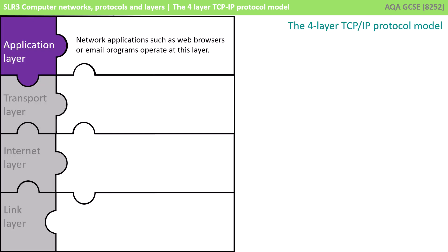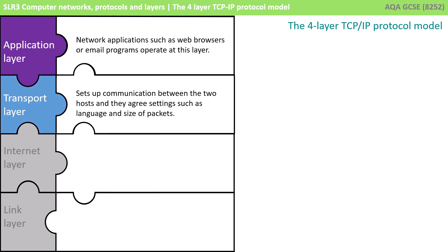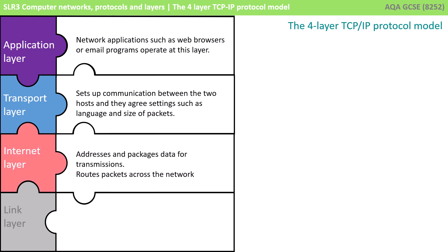So let's take this out of the abstract and actually look at the four specific layers of the TCP/IP protocol model. The top layer is the application layer — this is the first layer that network traffic goes through when travelling down through the protocol stack and out onto a network. Network applications such as web pages or email programs operate at this top layer. The information then gets passed down to the transport layer, which is responsible for setting up communication between the two hosts and agreeing settings such as the language and the size of various packets. This then gets passed down to the internet layer, where we address the packets and data for transmission and route the packets across the network.